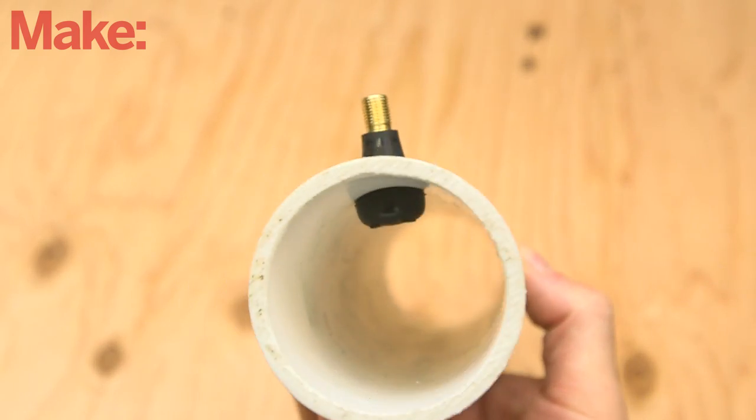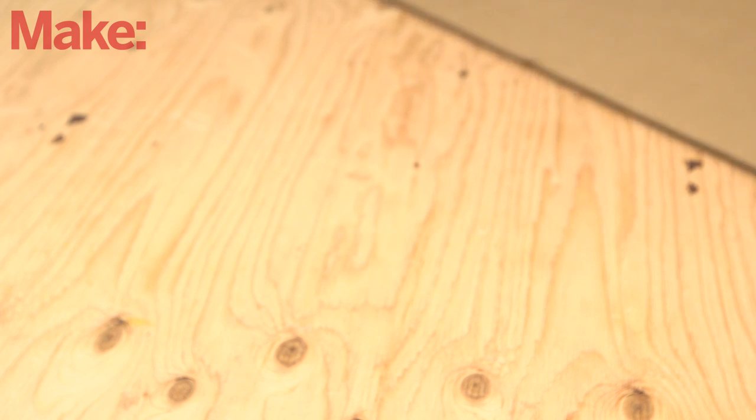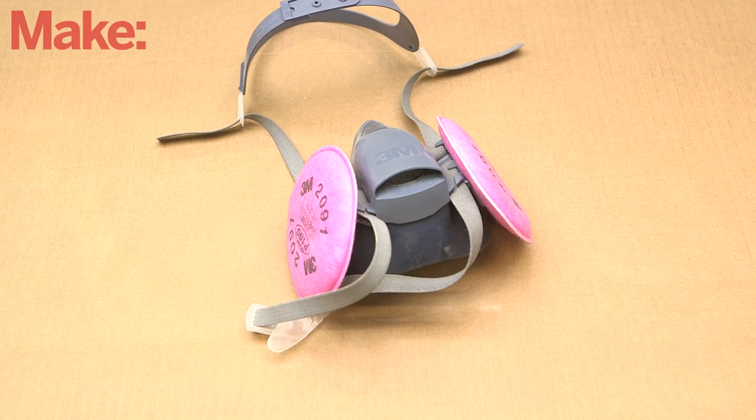Once the valve is seated, you'll glue the cannon together. Since this project will be under pressure, we'll be using both primer and cement to join the components. Gluing PVC isn't too tricky, but it can be messy. Set something on the floor to catch any drips. Also, this stuff is nasty. Use a respirator if you aren't outside.